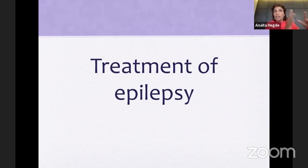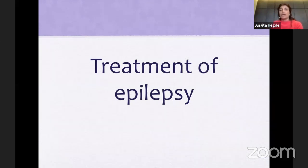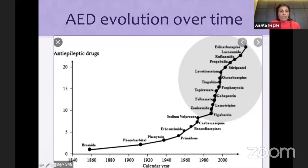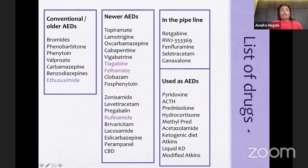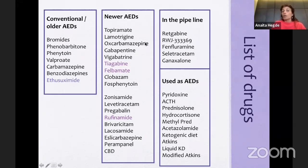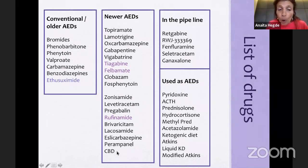So now you have an understanding of seizure, fit, convulsion, symptomatic, unprovoked, first unprovoked — and now comes treatment of epilepsy. These are the drugs we've had from the 1816s, starting with bromide, with an exponential increase in newer drugs from 1919 to 2020. The conventional drugs are bromides, phenobarbitone, phenytoin, valproic acid, carbamazepine, benzodiazepines, and ethosuximide, now available in our country. The newer drugs include topiramate, lamotrigine, oxcarbazepine, vigabatrin, gabapentin, tiagabine, felbamate (not available in India), clobazam, fosphenytoin, zonisamide, levetiracetam, pregabalin, rufinamide (not available), brivaracetam, lacosamide, perampanel, and cannabidiol oil — not available in India but other forms can be used.